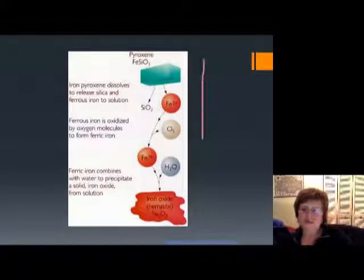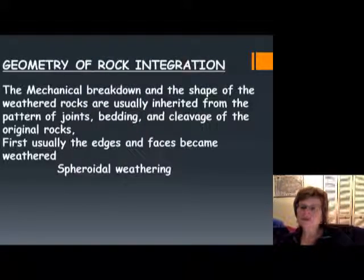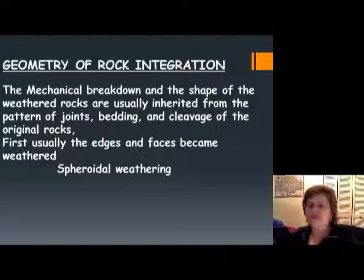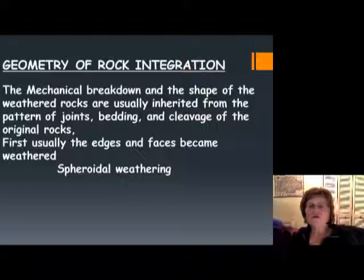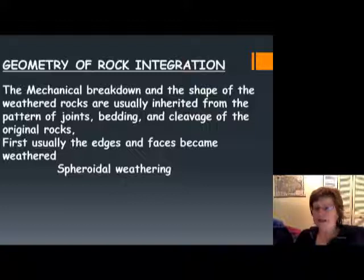Now we've finished the section on weathering. Remember the two types: physical weathering just breaks up rocks, while chemical weathering dissolves rocks so the elements separate and precipitate out later as other rock types. When you see clay minerals you can sometimes guess the original rock — felsic igneous rock weathers into kaolinite — but generally you cannot identify the original rock.